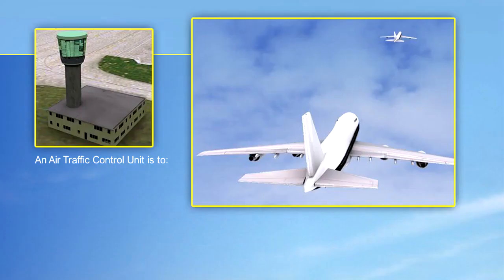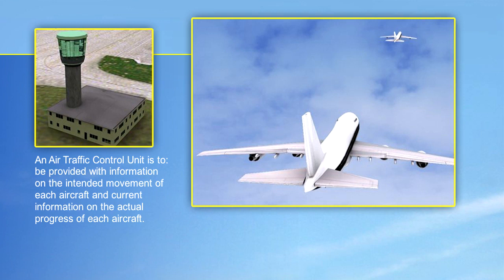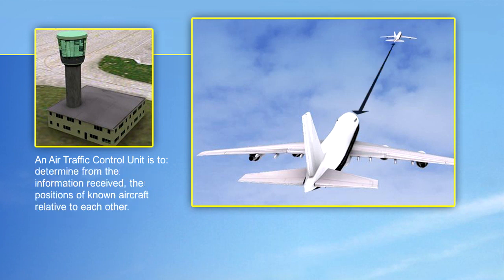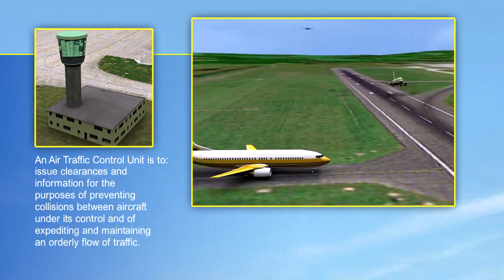In order to provide the required air traffic control service, an air traffic control unit is to be provided with information on the intended movement of each aircraft and current information on the actual progress of each aircraft, determine from the information received the positions of known aircraft relative to each other, and issue clearances and information for the purpose of preventing collisions between aircraft under its control and of expediting and maintaining an orderly flow of traffic.